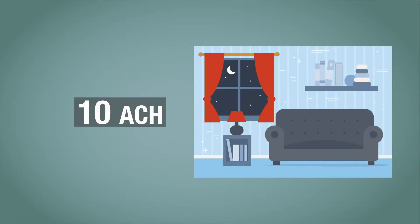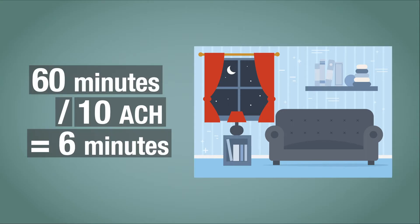If your room has 10 air changes per hour, that means that every six minutes an amount of fresh air equal to the volume of your room has come in through your vent.